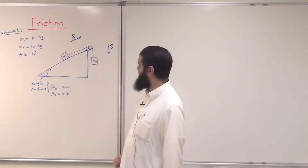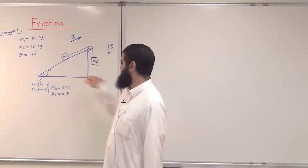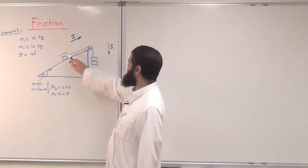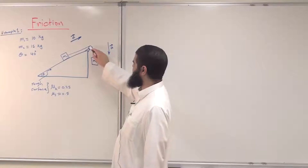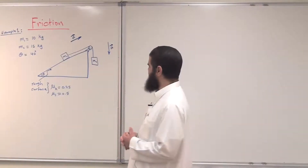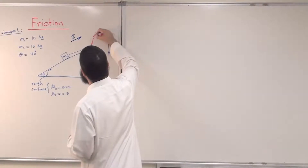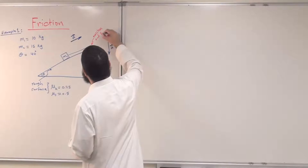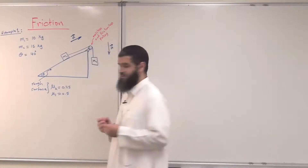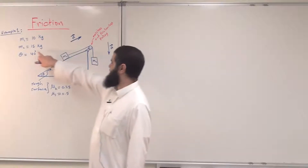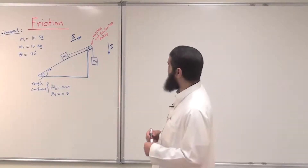The coefficient of static friction between the same two surfaces is 0.5. As you can see, mu_s is greater than mu_k for the same surfaces. The mass m1 is lying on that incline at an angle of 40 degrees with the horizontal, attached to another mass m2 through a pulley. The string passes over this massless and frictionless pulley.